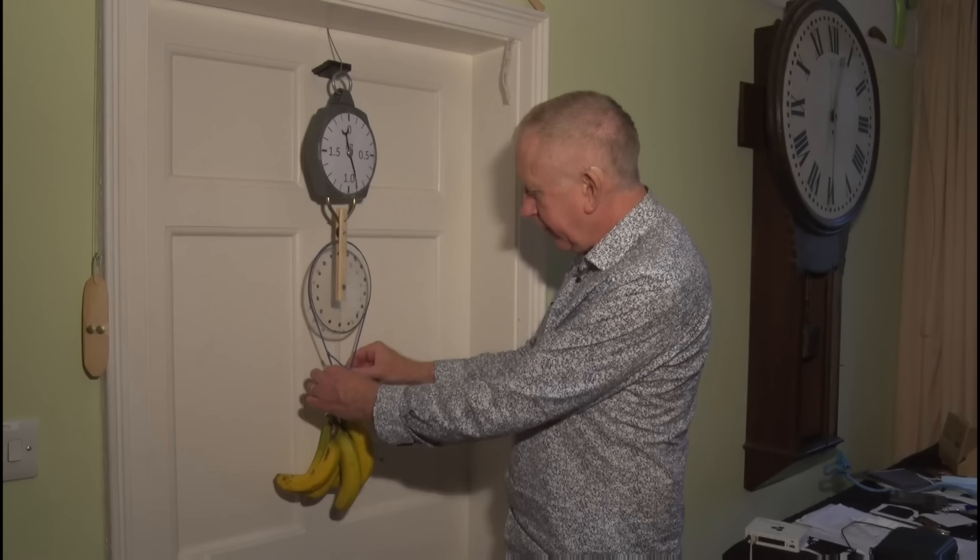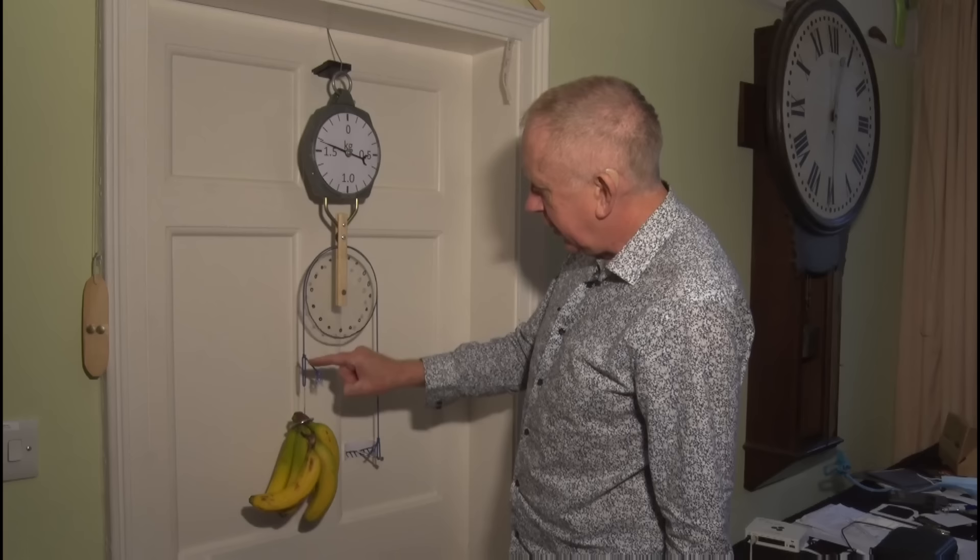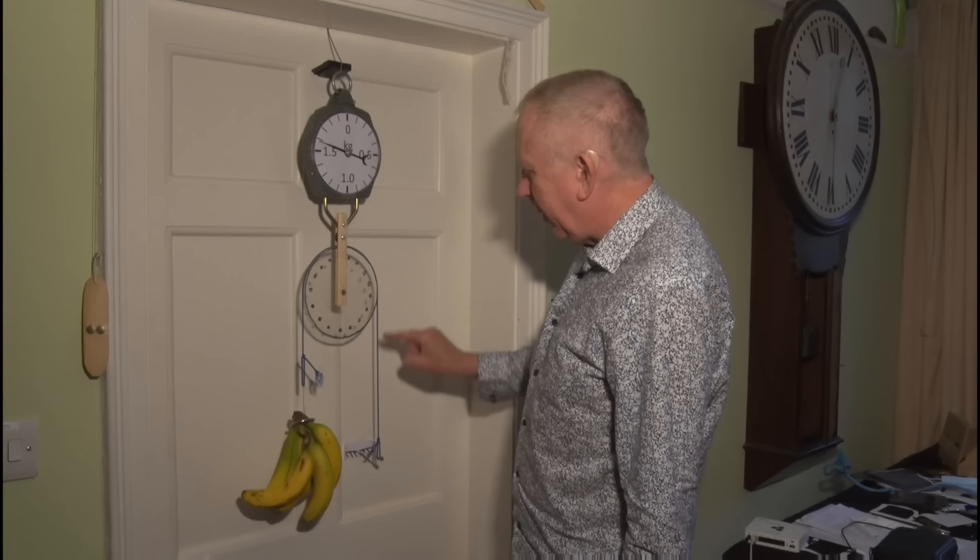When I hook this over the pulley, what's happening here is that the weight from the bananas is pulling down on this string, but the pulley means that the tension on this string here is equal to the weight of the bananas.